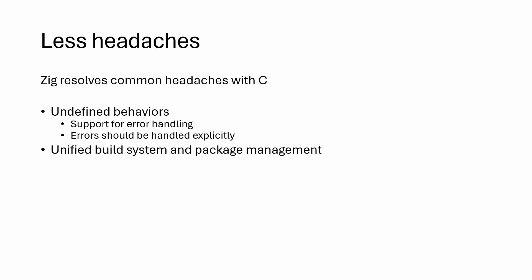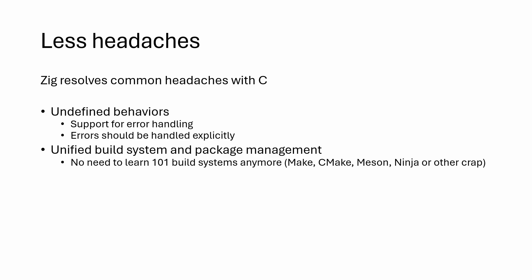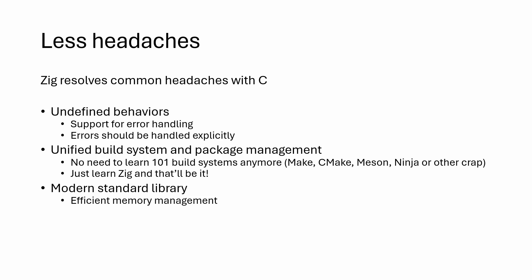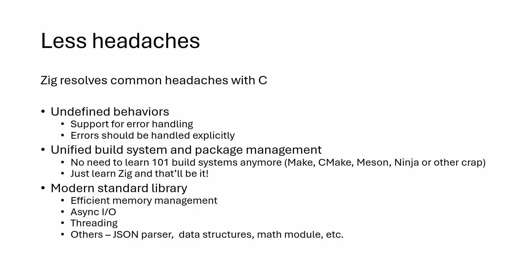Zig also has a unified build system and package management. In C, you would learn a hundred-and-one build systems to build your project — like Make, CMake, Meson, Ninja, or other tools — and then glue different dependencies together using git submodules, for instance. While in Zig, you can just learn Zig, and that'll be it. Zig also has a modern standard library with support for efficient memory management, asynchronous IO, threading, and other stuff like JSON parsers, data structures, map modules, etc.